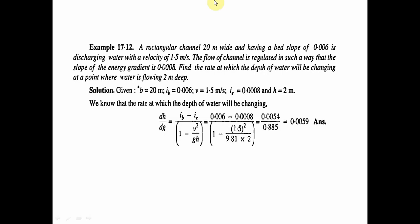Problem: A rectangular channel 20 meters wide, having a bed slope of 0.006, is carrying water with a velocity of 1.5 meters per second. The flow is regulated such that the slope of the energy gradient is 0.0008. Find the rate at which the depth of water will be changing at a point where water is flowing 2 meters deep. Given: breadth = 20 meters, bed slope ib = 0.006, V = 1.5 m/s, ie = 0.0008, h = 2 meters.